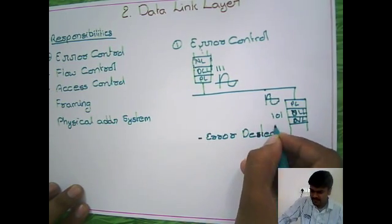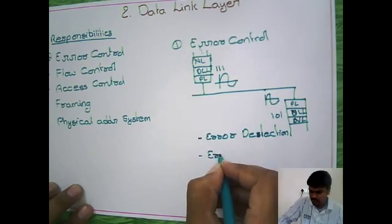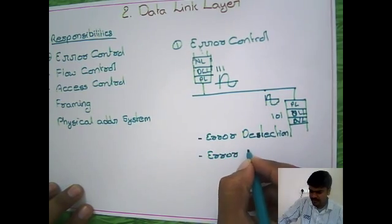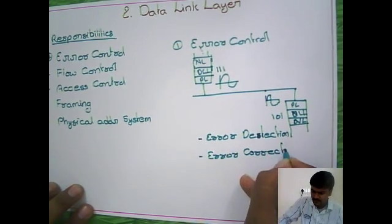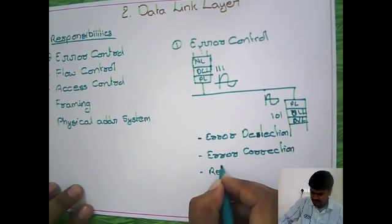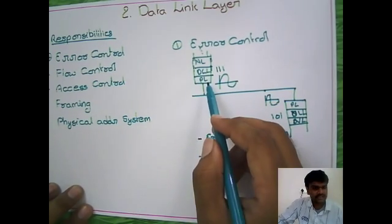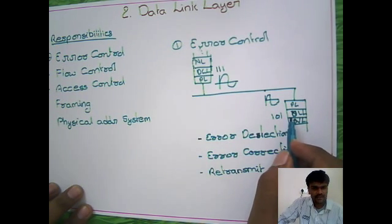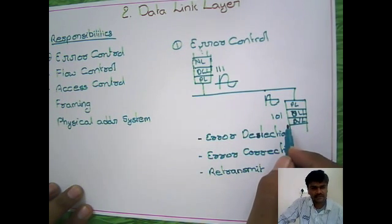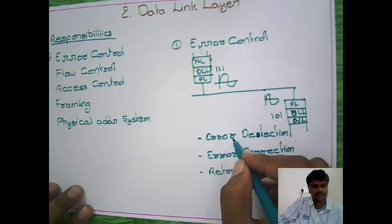Error detection happens at the destination site. Then it has to do error correction. If it's not possible, then retransmission occurs. Whenever you send data, the destination needs to know whether the received data is original or not. If it is not original, you need a mechanism to identify the error, which is error detection.